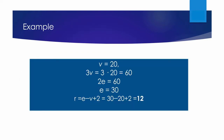Euler's formula is illustrated in the following example. Suppose a connected planar simple graph has 20 vertices, each of degree 3. Into how many regions does a representation of this planar graph split the plane? This graph has V = 20. Because the sum of degrees equals 3 × 20 = 60, and this equals 2E, we get E = 30. By Euler's formula, R = E − V + 2 = 30 − 20 + 2 = 12 regions.